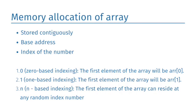Memory allocation of array. As data elements of an array are stored contiguously in the main memory, the memory of array represents the base address or the address of the first element. Each element of the array is represented by an index number.